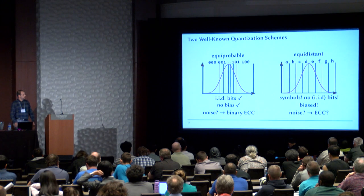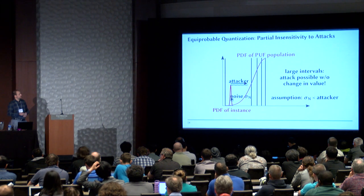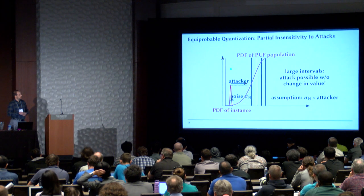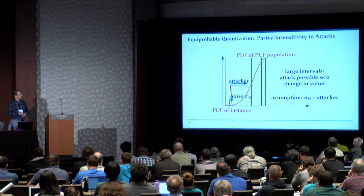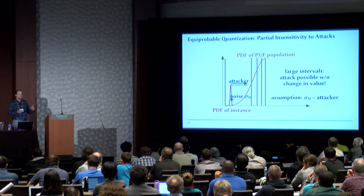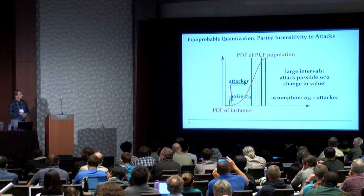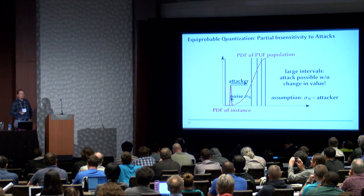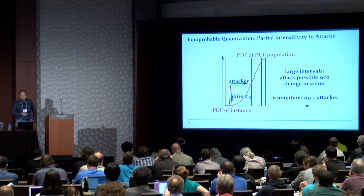Why would we want to use equidistant over equiprobable? There's always a small catch. If we look at equiprobable quantization in terms of tamper sensitivity, we have differently sized intervals — the outermost intervals are rather large. If we have some measurement noise and want this to work in a tamper-evident context, the typical assumption is that noise is much smaller than the magnitude change induced by the attacker. In large intervals, the attacker can shift a value without changing the bit string, defeating the purpose of a tamper-evident PUF.